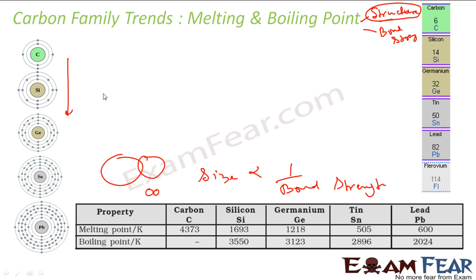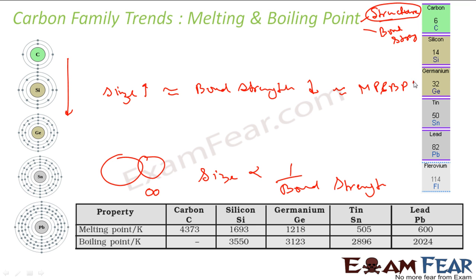Going down the group, size is increasing. If size is increasing, that implies bond strength will decrease. If bond strength is decreasing, that implies melting point and boiling point will decrease. There is generally a decrease in melting and boiling point as we go down. There are some exceptions due to different structures, but the general trend is that bond strength decreases, so melting and boiling point will decrease.